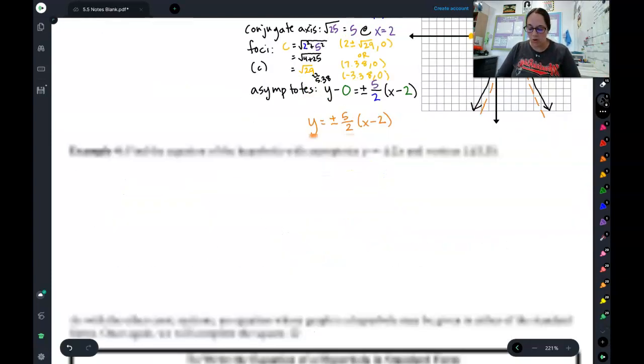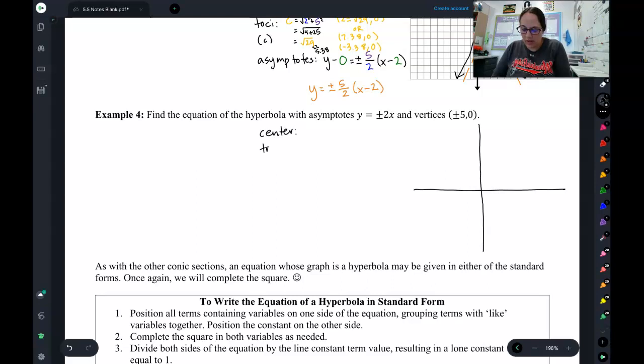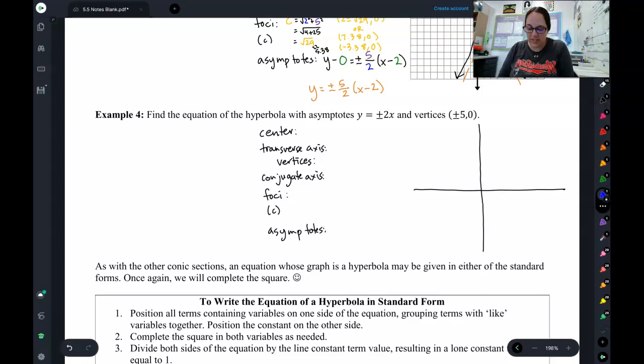So, now that we've done one of these on our own, I would like you to try out example 4. Same thing. It gives you a couple pieces of information. This one is a little bit different. Let's list what it gives us first. So, it looks like this problem gives us our vertices at 5, 0 and negative 5, 0. There's my vertices.